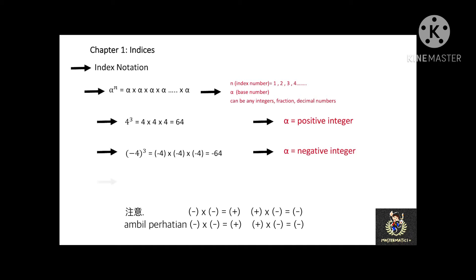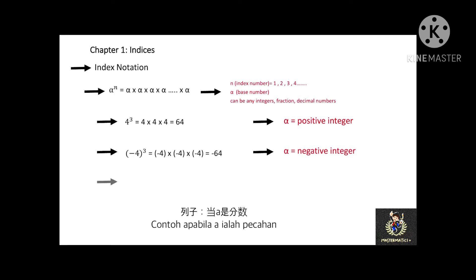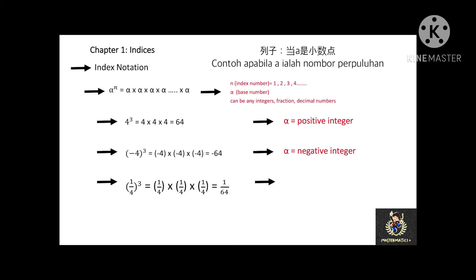Therefore you will get a negative answer. How about when alpha is a fraction? For example, 1 over 4 to the power of 3 equals 1 over 4 times 1 over 4 times 1 over 4, which is 1 over 64. When alpha is a decimal number, for example, 0.4 to the power of 3 equals 0.4 times 0.4 times 0.4, which gives 0.064.